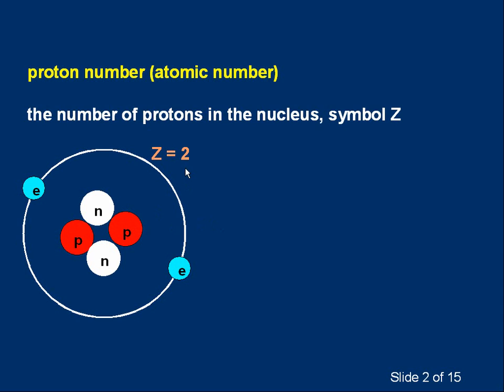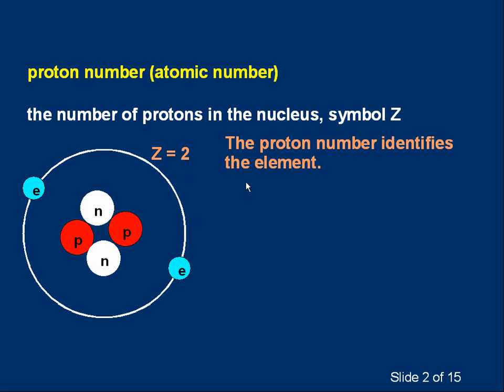The number of electrons and neutrons don't matter. Atomic number is quite important. The main thing to remember is the atomic number, or the proton number, identifies the element.